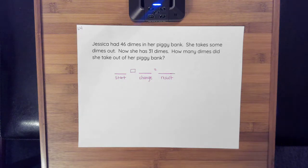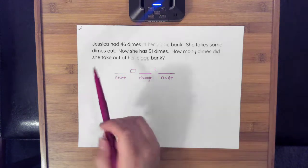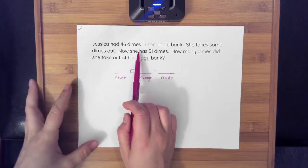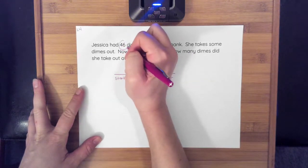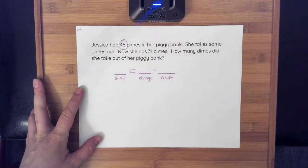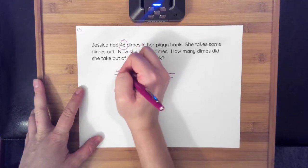Okay, so after you pause the video, I'm going to walk through my thinking. I want you to see if your thinking matches mine on how you would set up this word problem. It says Jessica has 46 dimes in her piggy bank. So I know Jessica is starting out with 46 dimes, so I'm going to put that in my start.